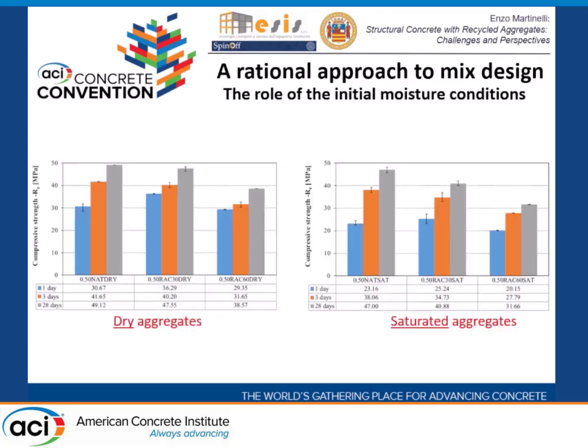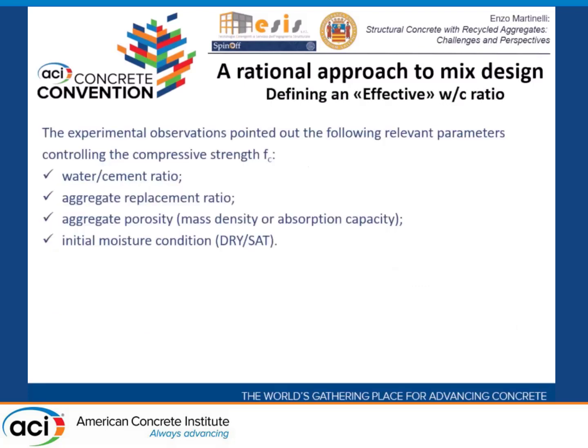Porosity is an important parameter, especially when you compare mixtures with dry versus saturated aggregates. When mixing, there is almost no difference for the reference mixture, but at 50% replacement you see that dry aggregates work better because they reduce the water-cement ratio. Our approach is based on this fundamental observation, leading us to a generalization of Abram's law, which includes not only the water-cement ratio but also the aggregate replacement ratio and quality measures.